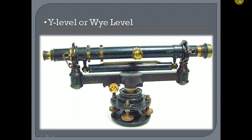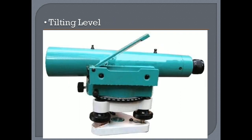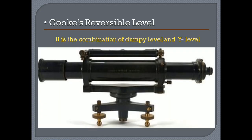The next type is the Y-level or wheel level, which is not generally used as the setup station is quite complicated. The third type is the tilting level — this was the most used level machine before the auto level was introduced. There are different variants of tilting level. The fourth type is Cook's reversible level, which is a combination of the Y-level and dumpy level, but the auto level has replaced this instrument.